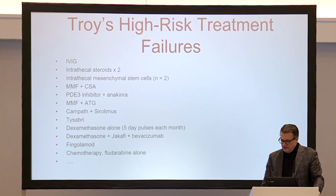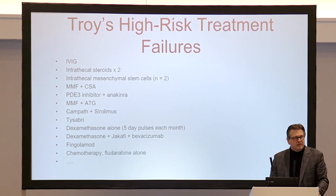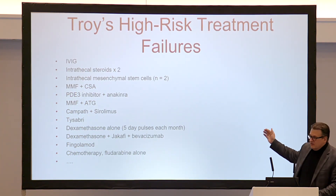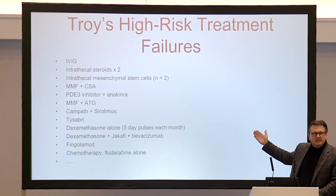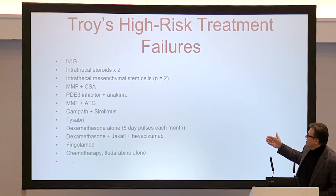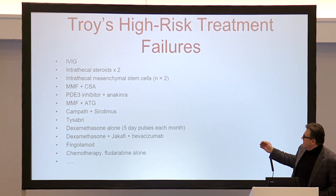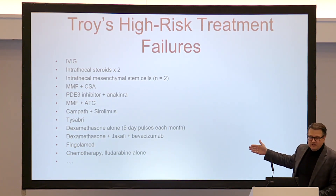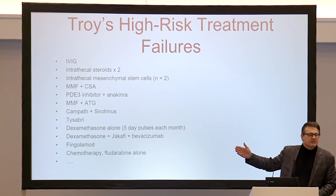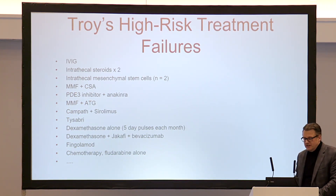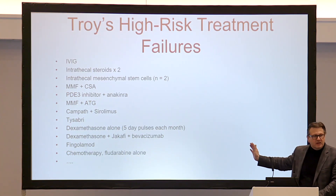I put together a list of all the things I've tried to treat high-risk boys with. From memory: IVIG, intrathecal steroids, mesenchymal stem cells in the spinal column, immunosuppressants, PDE inhibitors, Anakinra, Campath, sirolimus, Tysabri, dexamethasone and pulse dexamethasone, Jakafi, bevacizumab, fingolimod, and chemotherapy using fludarabine alone without a transplant. These are all completely failed in treating high-risk boys.